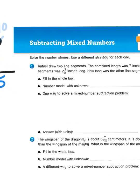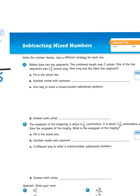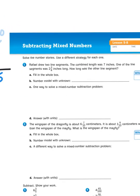When I look at my first problem here, I'm going to be thinking along the same lines. It says, Raphael drew two line segments. The combined length was seven inches. One of the line segments was 2⅜ inches long. How long was the other line segment? So let's draw a pair of line segments. I've got two endpoints. And then I'm going to put another point somewhere along the line, creating two segments.